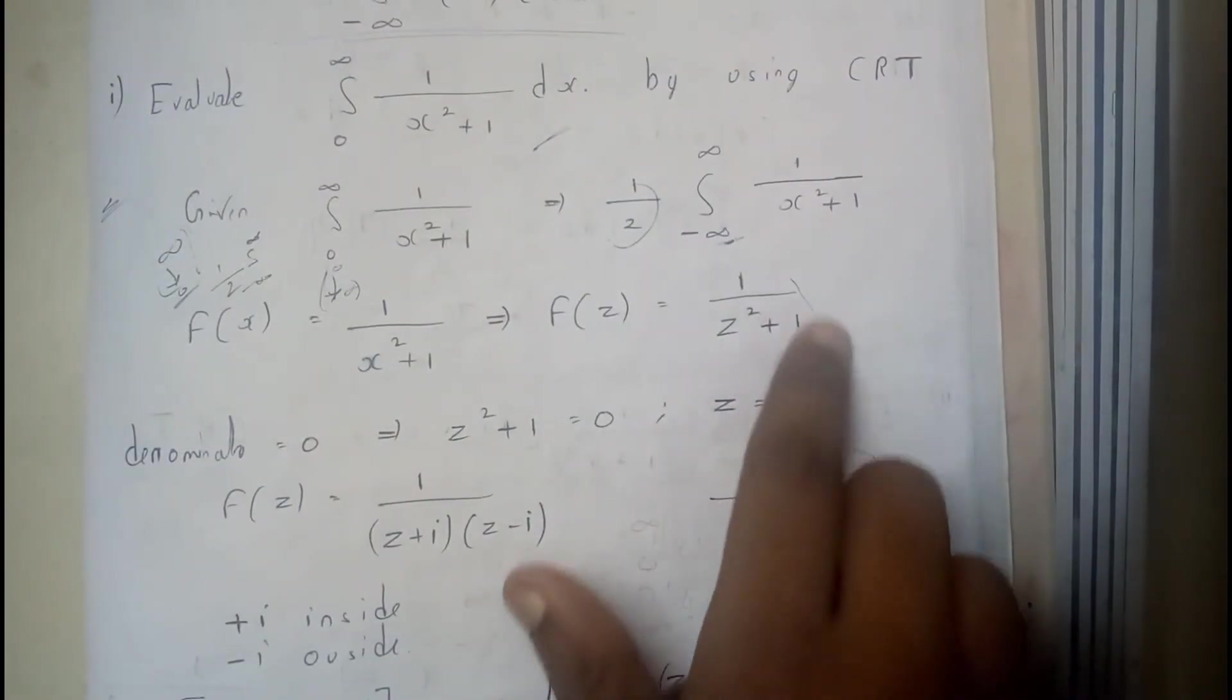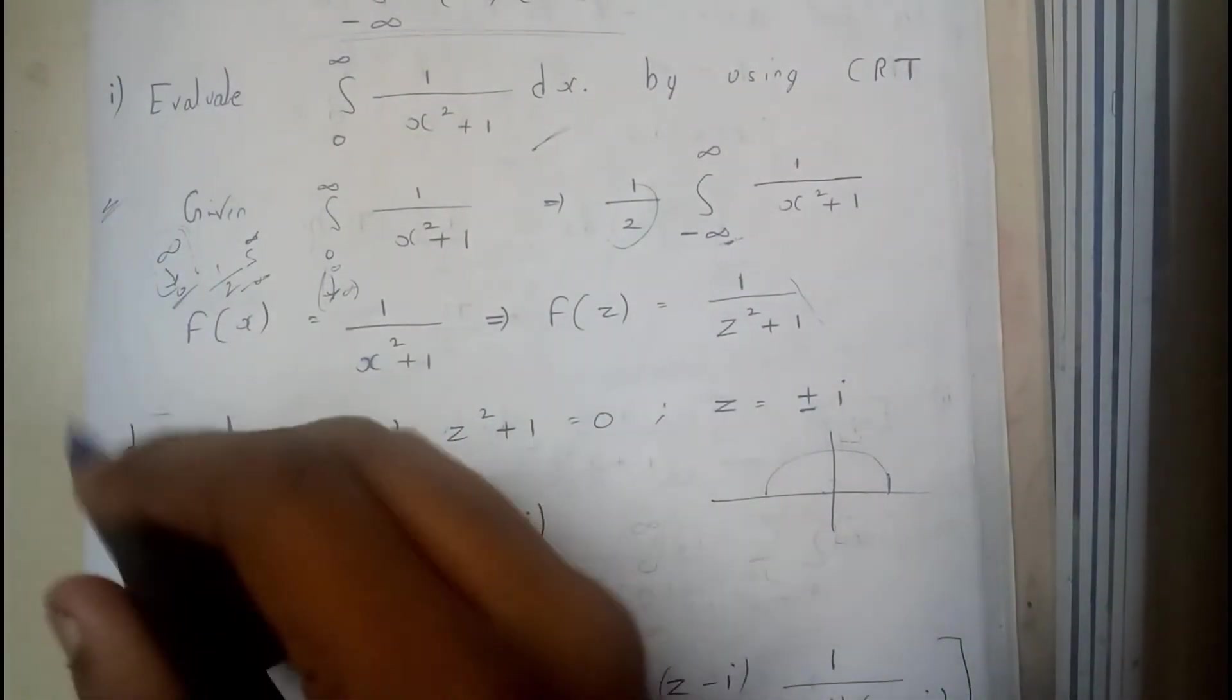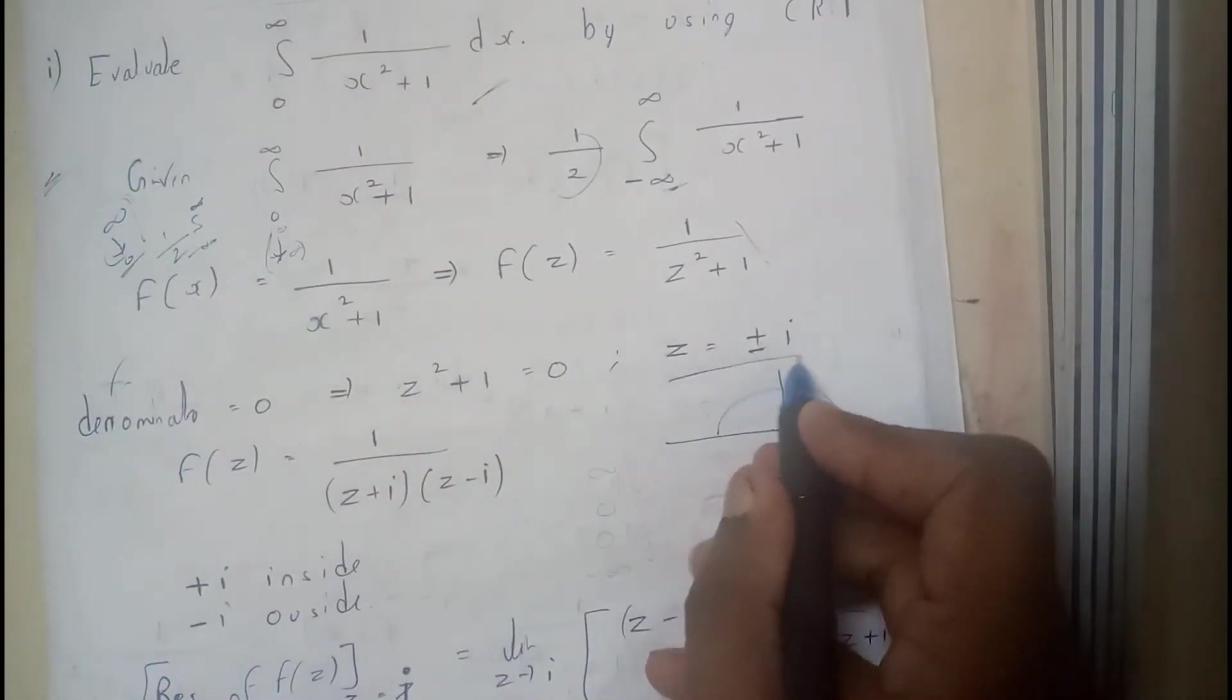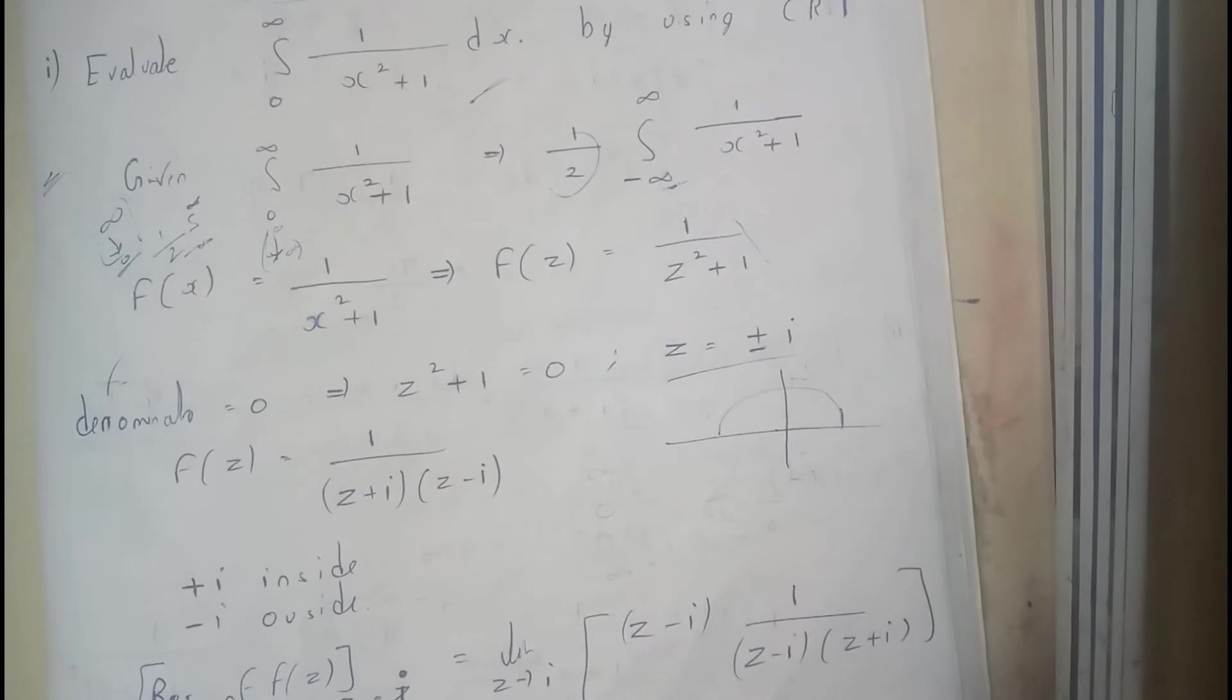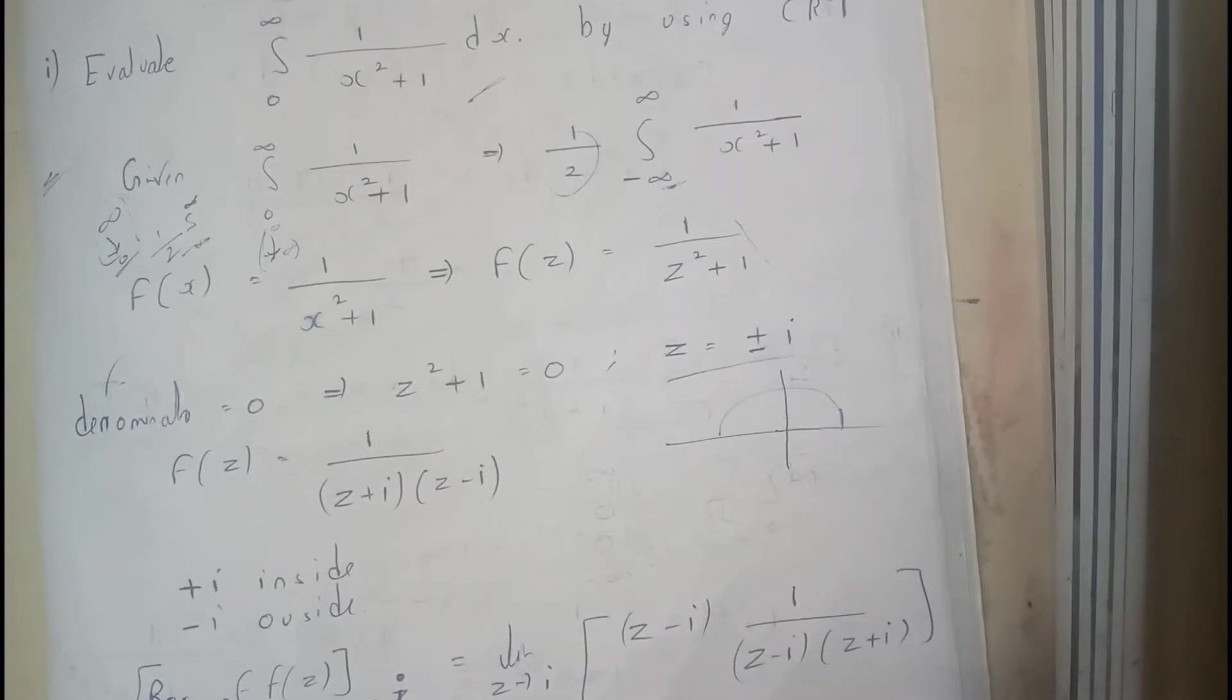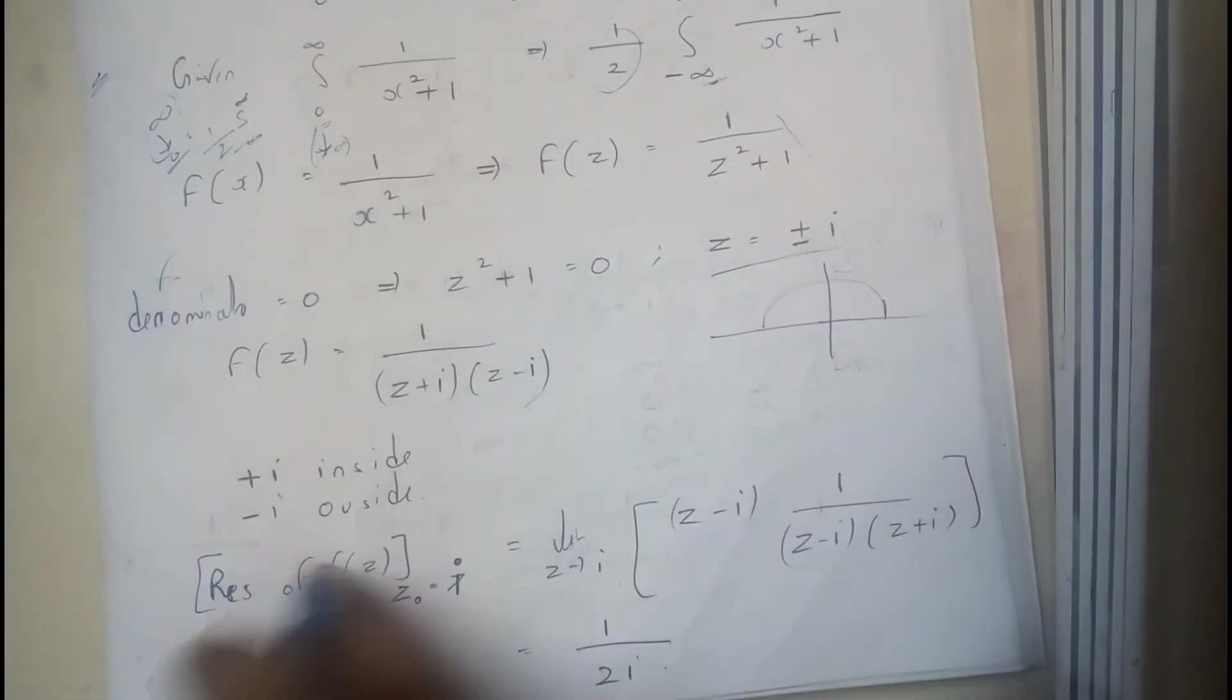And now I will be finding the as usual poles, that is nothing but denominator is equal to 0. So I got z is equals to plus or minus i. So I have told you that the positive imaginary parts will be inside and the negative imaginary parts will be outside. So now these are the roots.